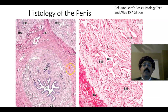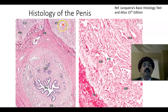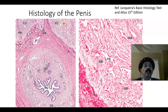The corpus spongiosum is surrounded by the tunica albuginea. Here again is the corpus cavernosum. Erectile tissue is present both in the corpus spongiosum and corpus cavernosum. The vascular spaces are lined by endothelial cells and are fed by the helicine arteries. Helicine arteries are branches of the central artery of the penis and are also lined by endothelial cells. There is arteriovenous anastomosis, and veins are also present.